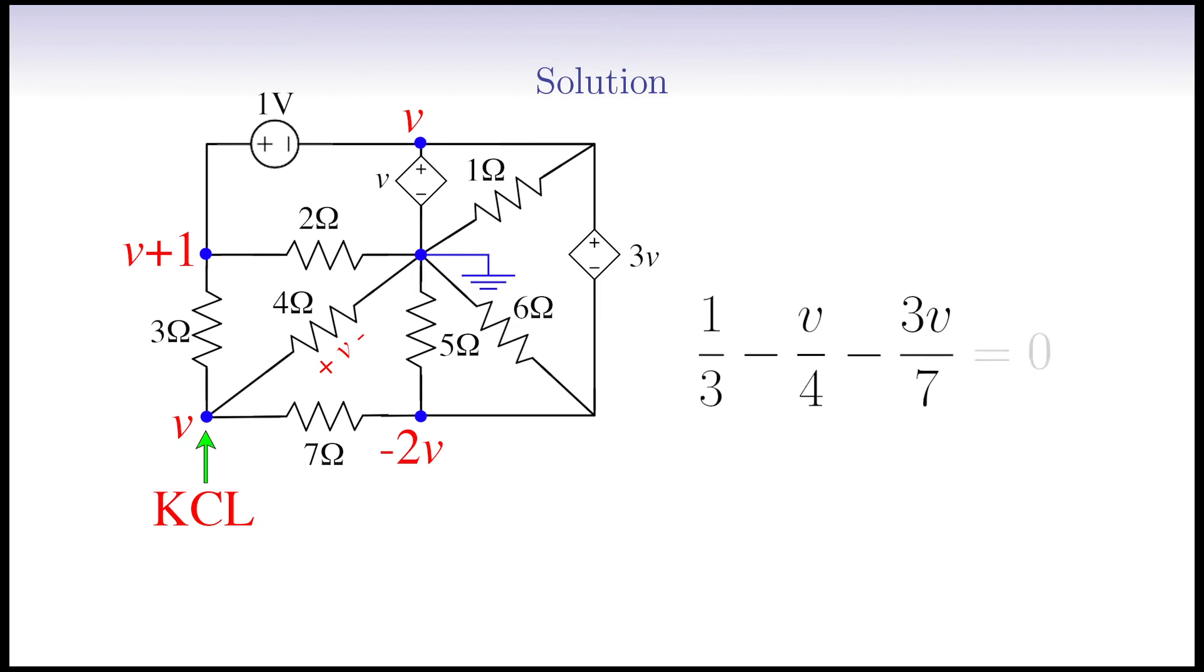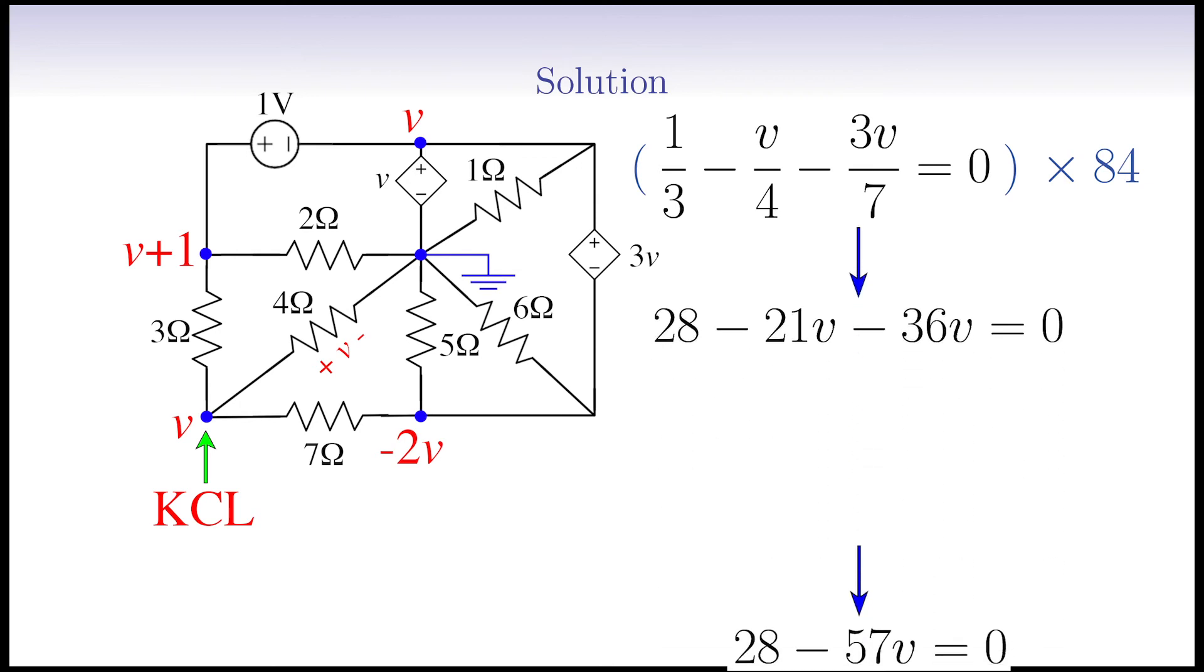By KCL, this algebraic sum is 0. We multiply both sides by 84 which is the minimum common multiple or MCM of 3, 4, and 7, and simplify it by grouping the unknowns on one side and sending the known value to the other side of the equation. We get 57V is equal to 28. Finally, we divide both sides by 57 to obtain V is equal to 28 over 57 volts.